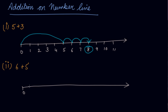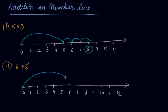Let's calculate 6 plus 5. We will shift from 0 to 6 first. After that, we will take 5 small jumps: 1, 2, 3, 4, and 5. So the answer is 11. If you add manually, 6 plus 5 is equal to 11. This is how you calculate it on the number line.